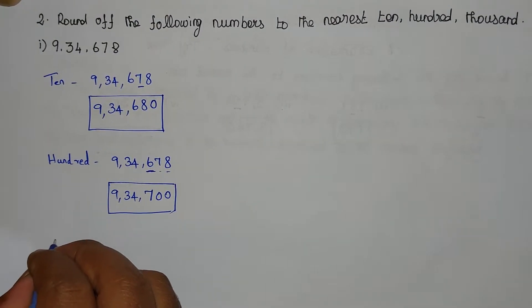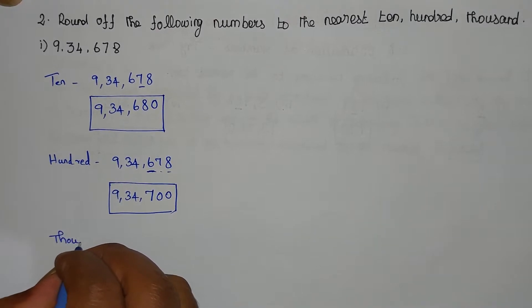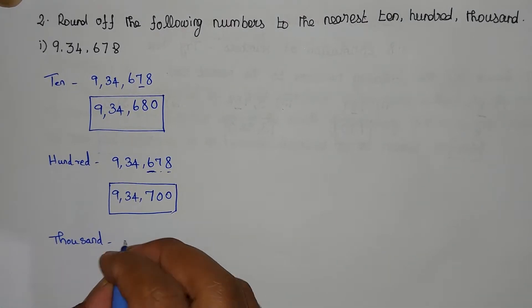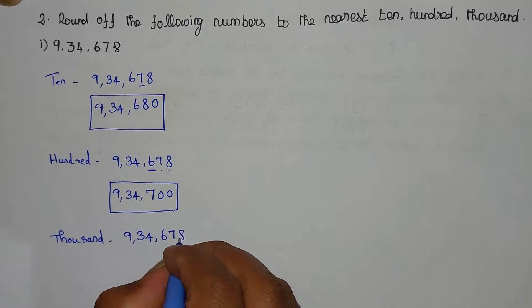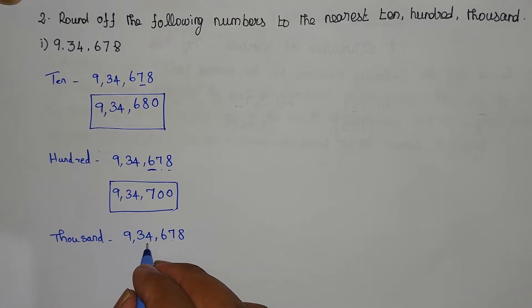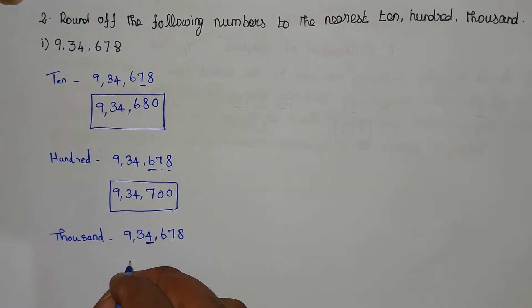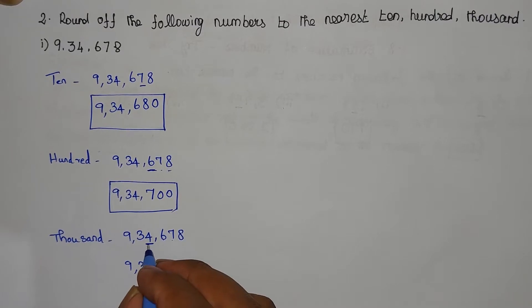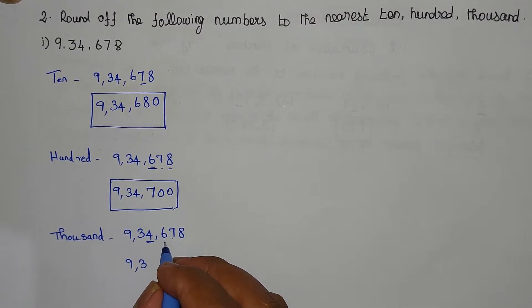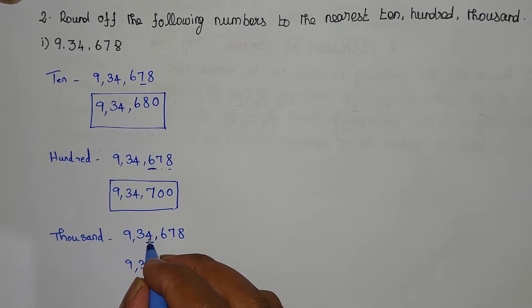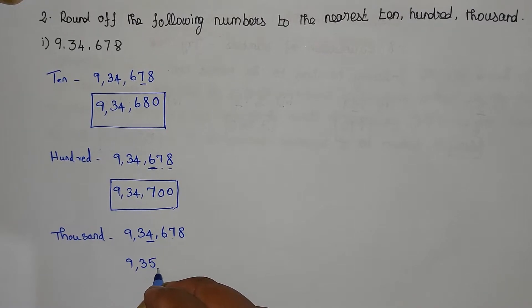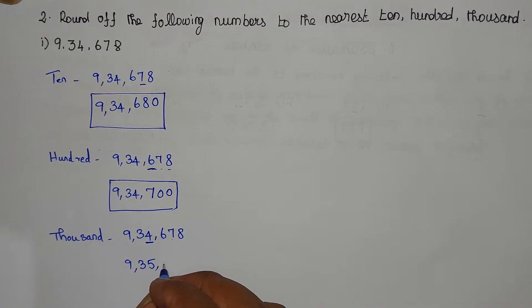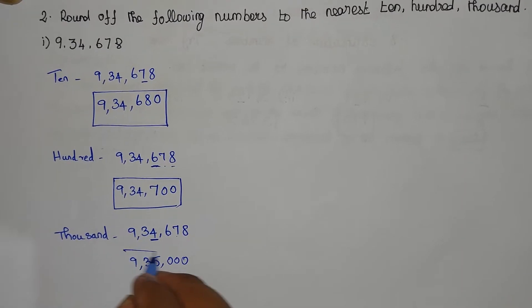Next, rounding to the nearest 1000. The 1000s place digit is 4. The right-hand side number is 6, which is greater than 5. So we add plus 1: 4 plus 1 equals 5. All digits to the right are replaced with 0. This is the answer.